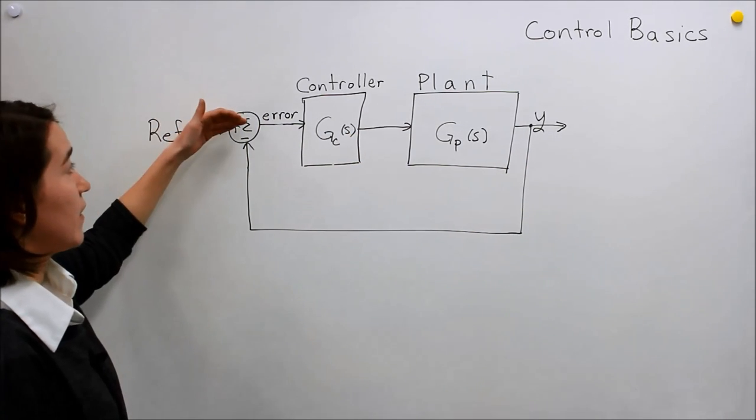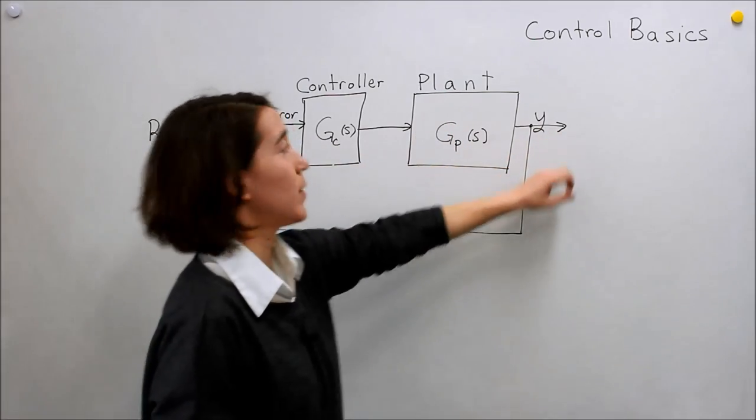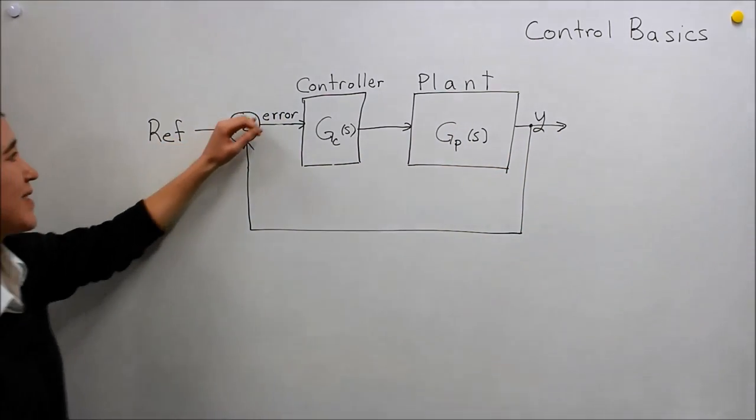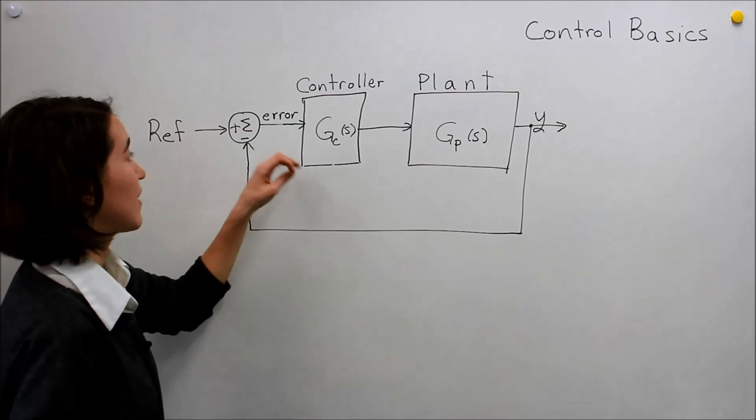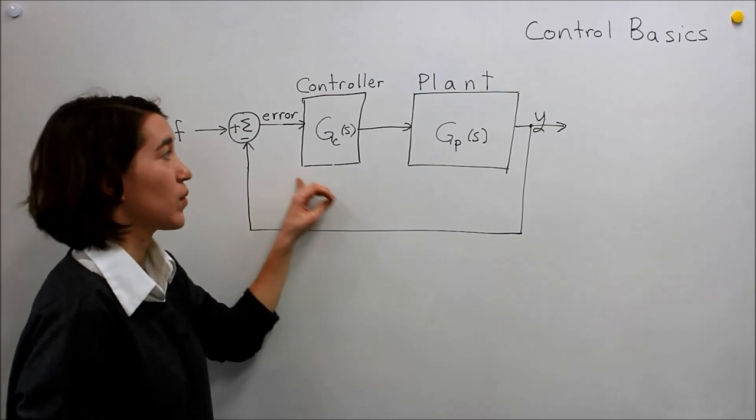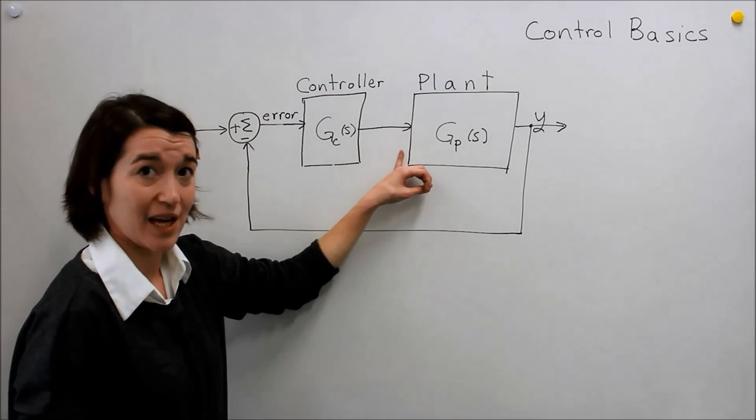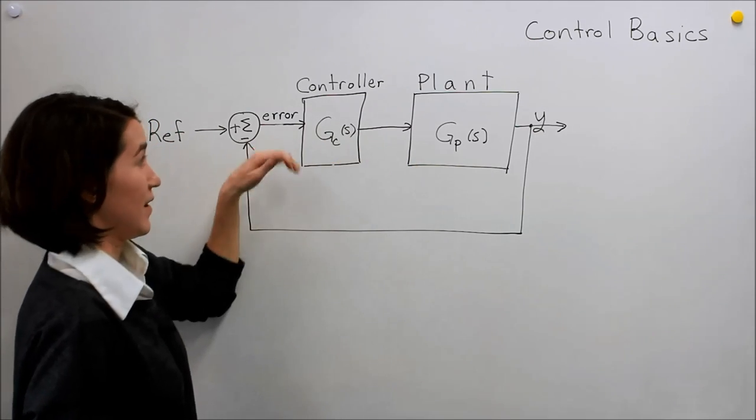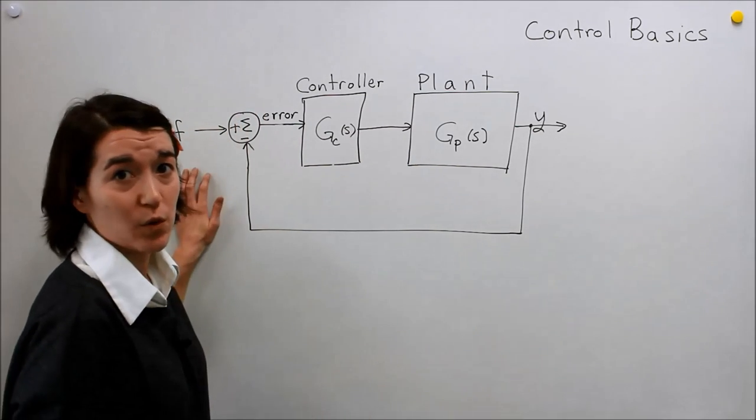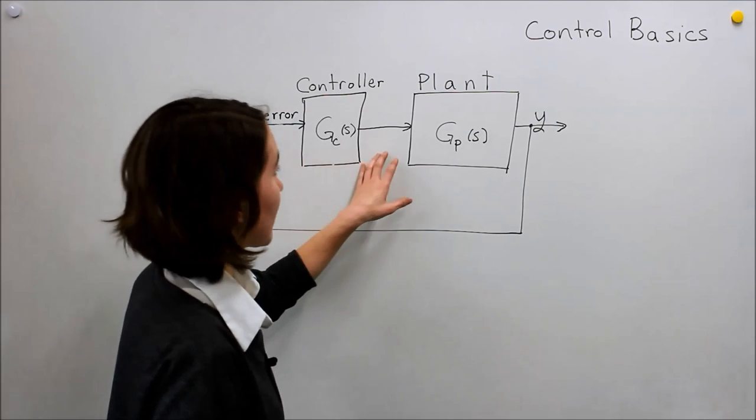So our error, we generate some output, we compare it to our reference, we see the error, we put that error into the controller, and the controller will change the input of the plant based on if it's above or below the reference point. So this is our basic setup,